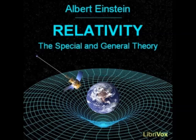However, we obtain a new result of fundamental importance when we carry out the analogous consideration for a ray of light. With respect to the Galilean reference body K, such a ray of light is transmitted rectilinearly with a velocity C. It can easily be shown that the path of the same ray of light is no longer a straight line when we consider it with reference to the accelerated chest, reference body K'. From this, we conclude that, in general, rays of light are propagated curvilinearly in gravitational fields.